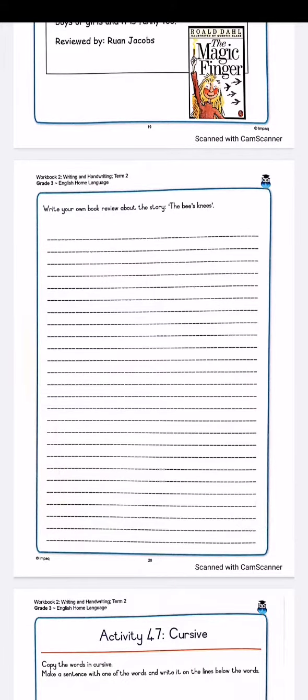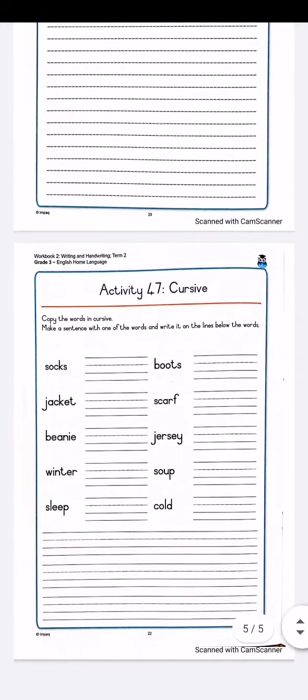The final one, so that you don't have any mistakes in your workbook. So for Activity 47, it's again the same as what you did for Activity 45, and you can do this one on Tuesday. Copy the words in cursive. Make a sentence with one of the words and write it on the lines below the words. So you're going to do the following words: socks, jacket, beanie, winter, sleep,